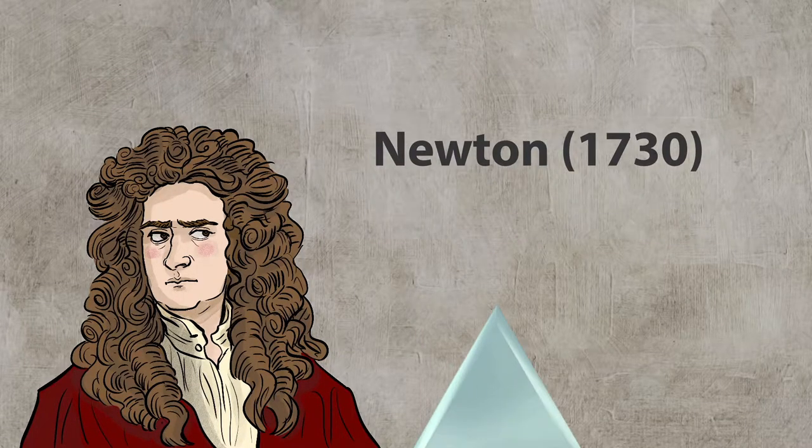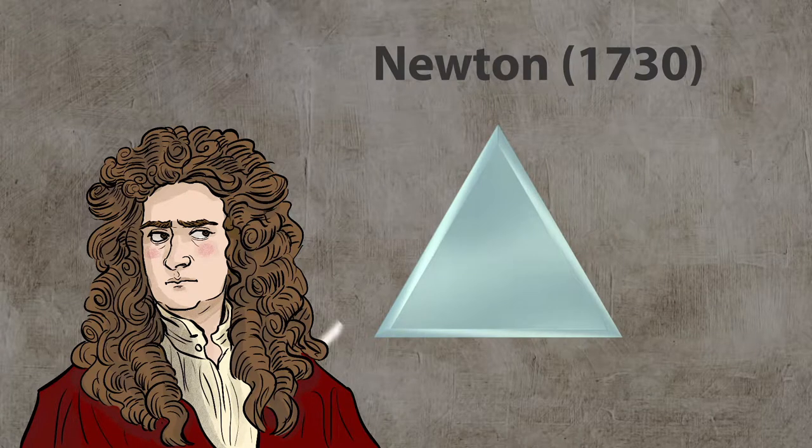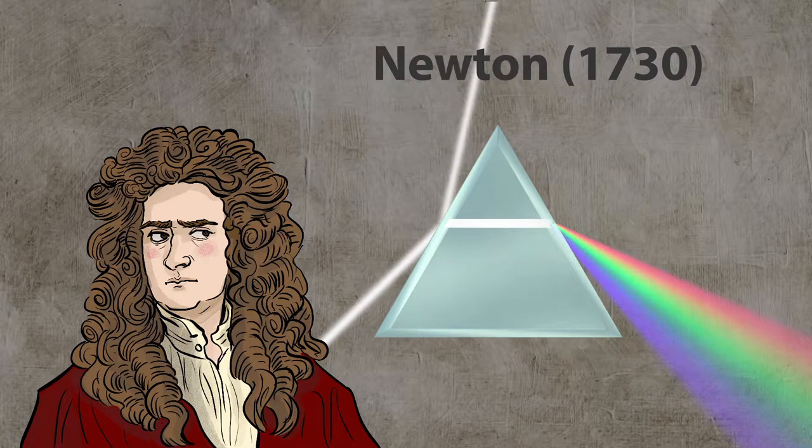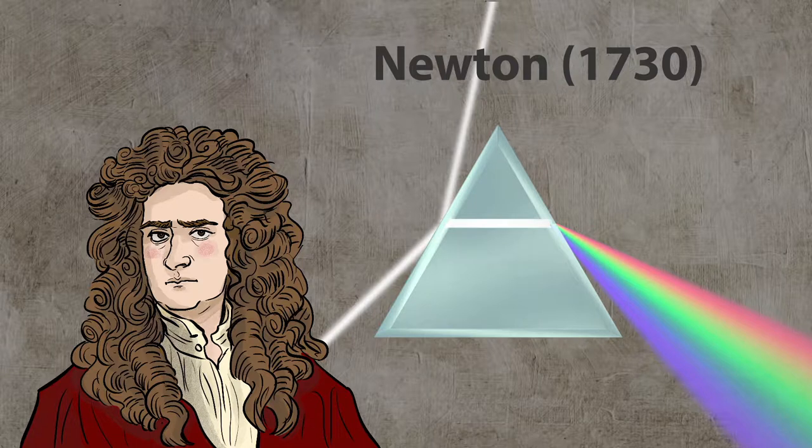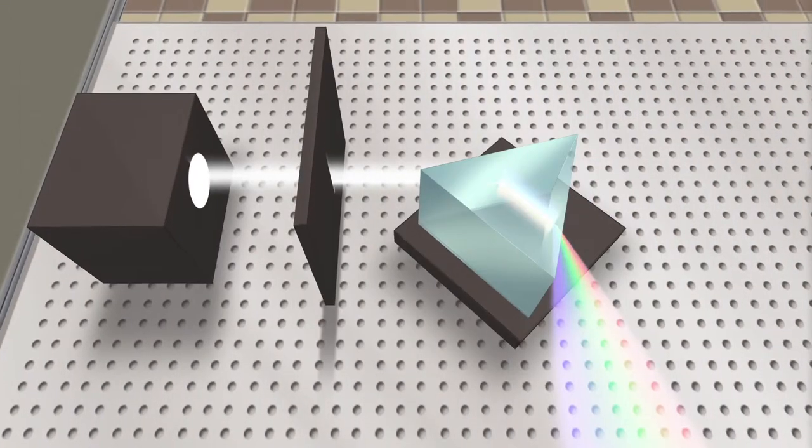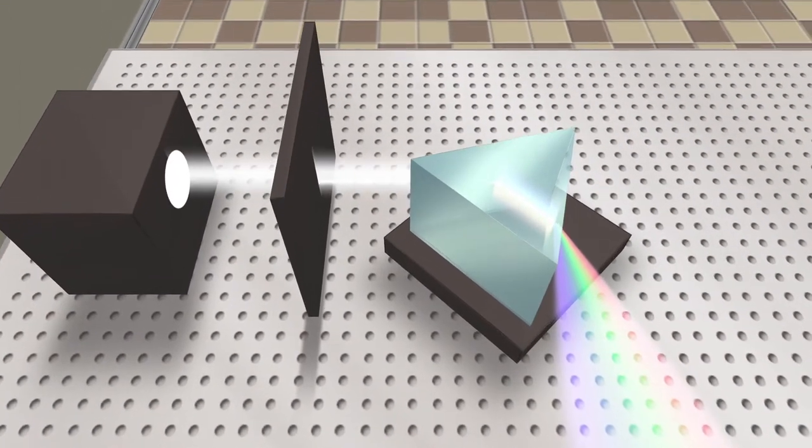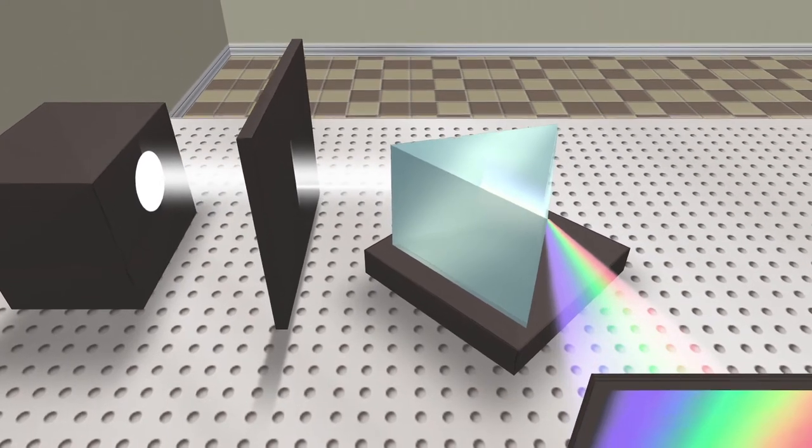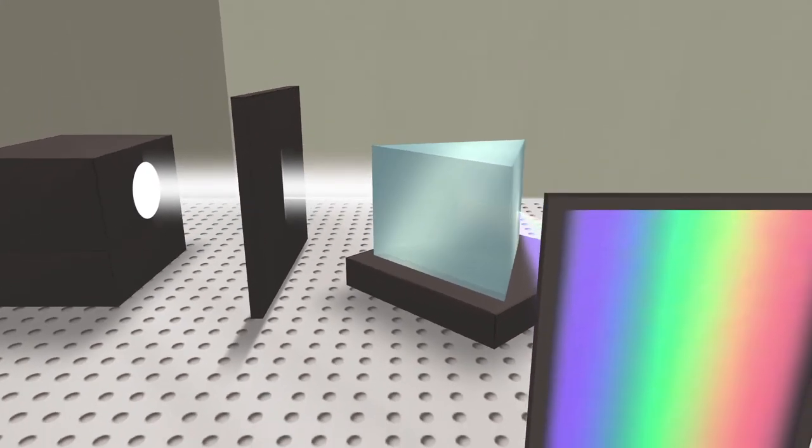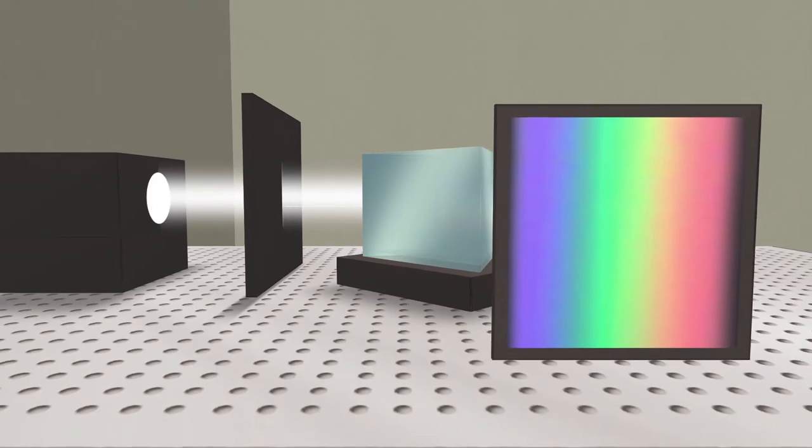Sir Isaac Newton split white light into spectral colors using a prism. We have built a similar experiment. The white light falls on the prism, which splits it up into its constituent colors forming a rainbow.